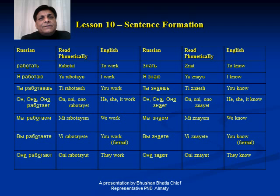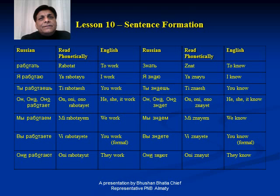And when it comes to 'Ani', meaning plural 'they', it is 'Ani Znayut' — they know. So to summarize: for 'Ya', the verb tail ends in '-u'; for 'Ti', it ends in '-esh'; for 'On/Ana/Ano', it ends in '-yet'; for 'Mi', it ends in '-em'; for 'Vi', it ends in '-ete'; and for 'Ani', it ends in '-yut'. In this way, according to each pronoun, the tail of the verb changes.